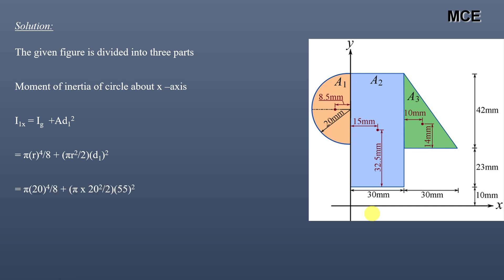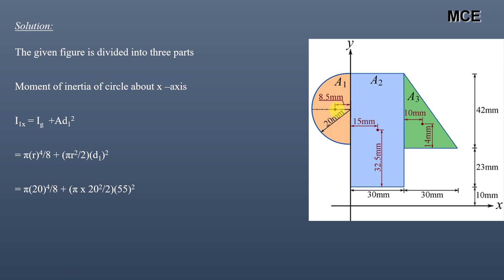Here r = 20 mm, and d₁ = 10 + 23 + (42 − 20) = 55 mm, which is the distance between the centroid of the semicircle and the x-axis. Substituting these values gives the moment of inertia of the semicircle about the x-axis as 1.963 × 10⁶ mm⁴.